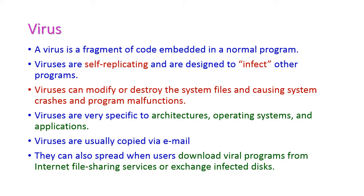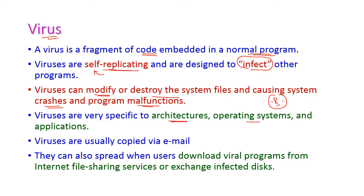The most dangerous program threat is a virus. It is a fragment of code embedded in a normal program, and viruses are self-replicating and designed to infect other programs. Self-replicating means it will copy itself multiple times in computer systems. A virus can modify or destroy system files, causing system crashes and program malfunctions, which is why it is called the most dangerous threat. Viruses are specific to computer architecture, operating system, and installed applications. They are normally spread via email and can also spread when users download viral programs from the internet, file sharing services, or exchange infected disks.